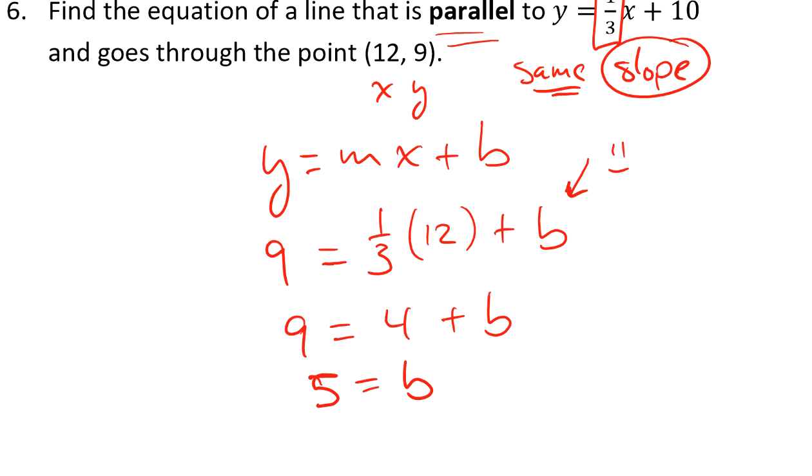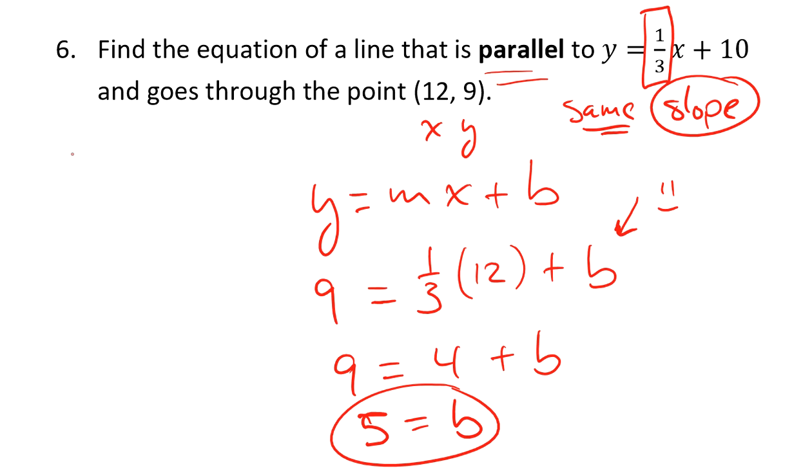Now that I know my slope and my y-intercept, I can write the equation of this line. The equation of the line that's parallel to the given line and goes through the point (12, 9) would be y equals 1/3 x plus 5.